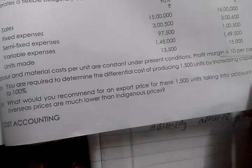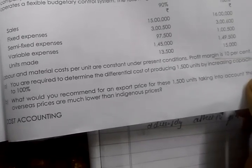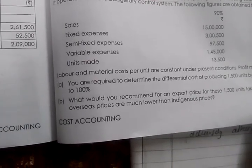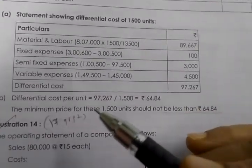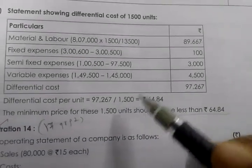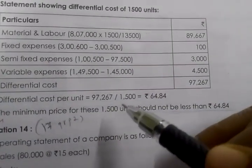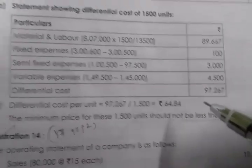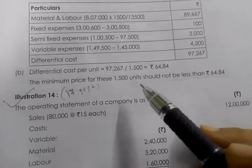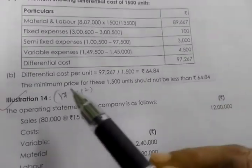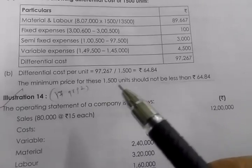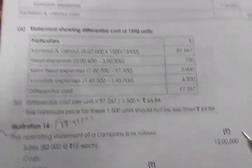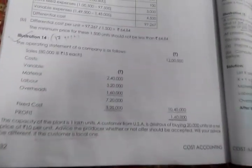For requirement B — the recommended export price for 1,500 units — since overseas prices are much lower than indigenous prices, we need the minimum price. The differential cost per unit is 97,267 ÷ 1,500 = 64.84. The conclusion is: the minimum export price for these 1,500 units should not be less than 64.84. That completes this question. In the next video I will cover Illustrations 14 and 15.